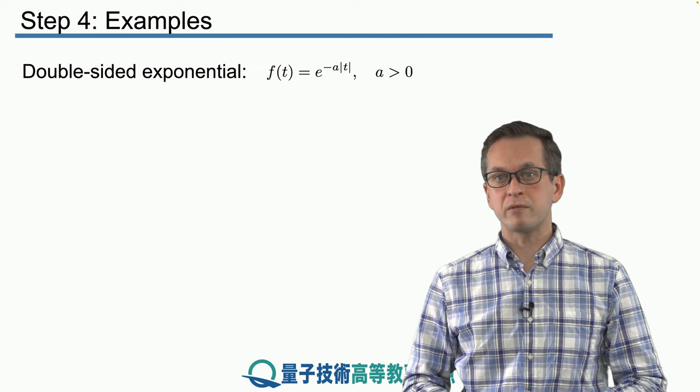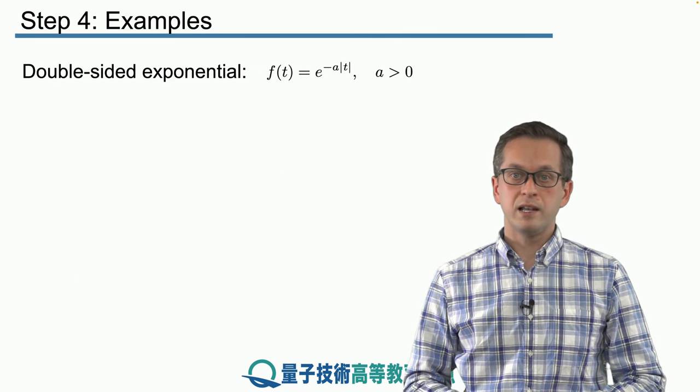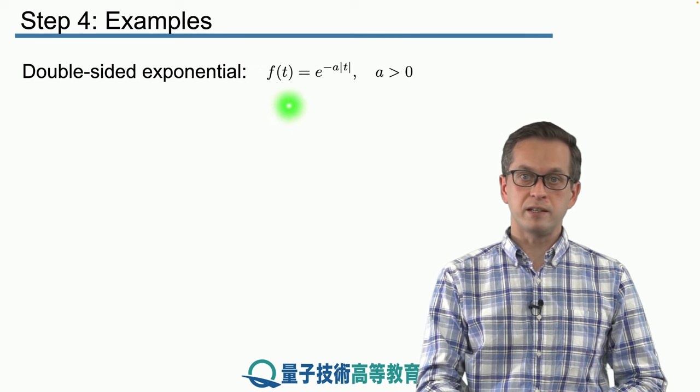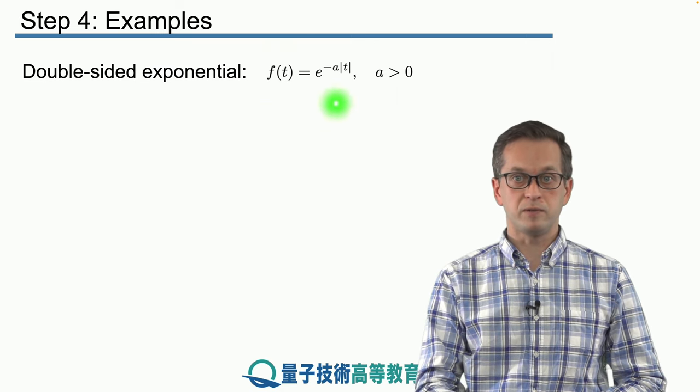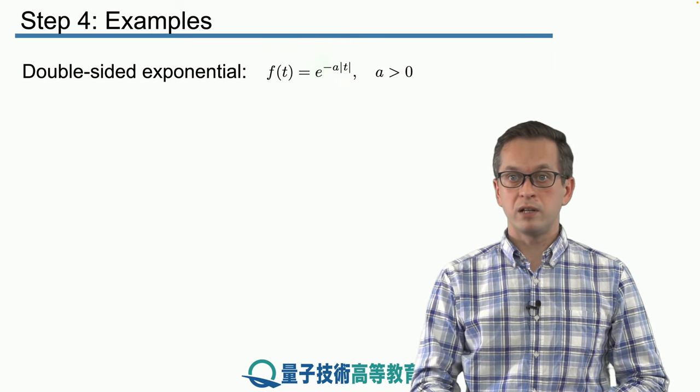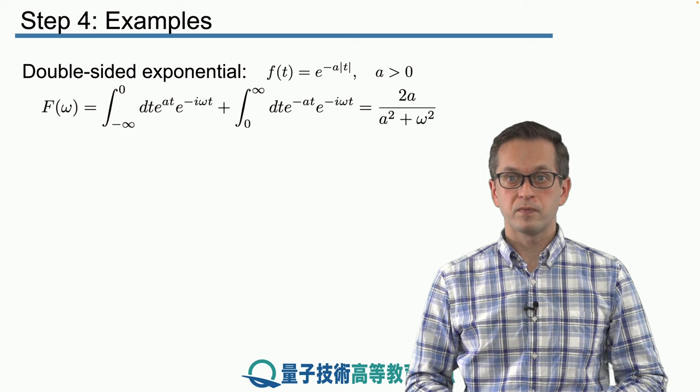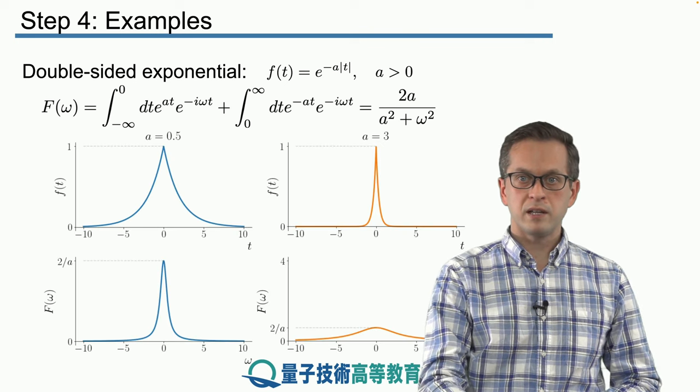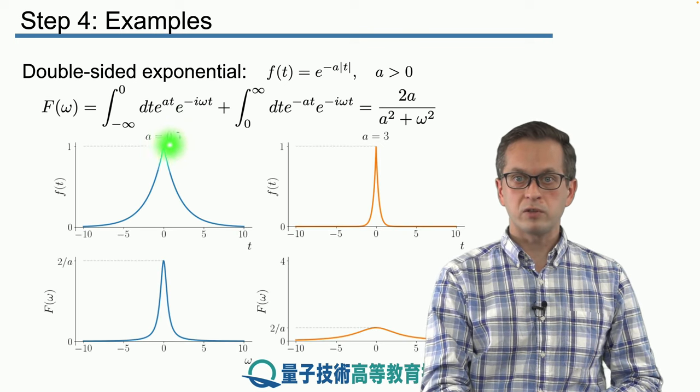So now let's look at something a little bit more complicated. Let's say that we've got a function given by this. This is called a double-sided exponential. So let's plot it first. We see that the function itself looks something like that.